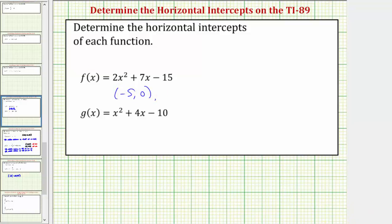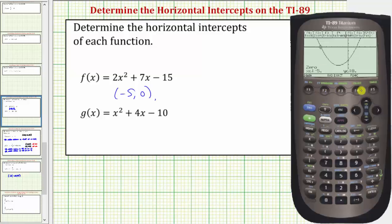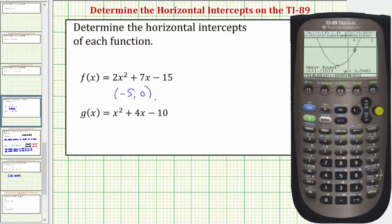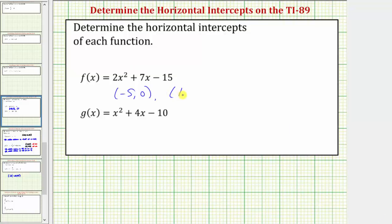Now let's find the second horizontal intercept. So we'll press F5 for math, two for zero. For the lower bound, we want to move the cursor to the left of this horizontal intercept, then press enter. The upper bound means be to the right of the point, so we'll press the right arrow until we're above the horizontal intercept, then press enter. Notice how the cursor is on the horizontal intercept, and the point is one point five comma zero. It is important to give the horizontal or x-intercepts as ordered pairs, because they are points on the given function.